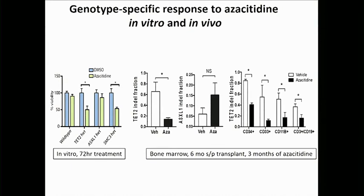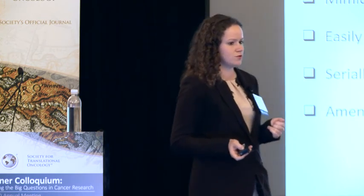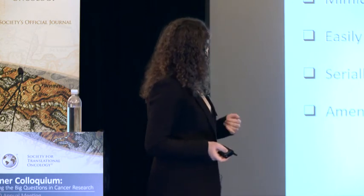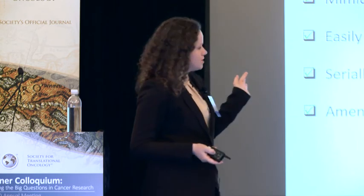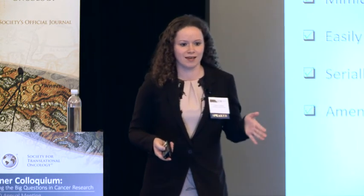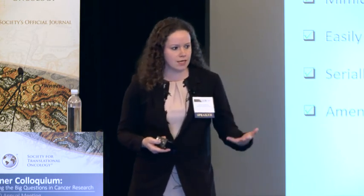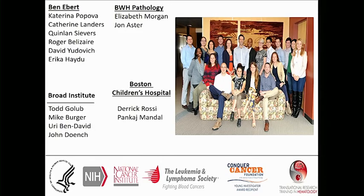I hope I've convinced you that we are perhaps one step closer to creating models more faithful to the genetic complexity observed in human myeloid malignancies — models targeting the actual cell of origin, hematopoietic stem and progenitor cells, that are easily customizable, where you can dial in and dial out specific genetic lesions, and amenable to pharmacologic testing. Clearly these models have their own limitations; the most important one being that we're engrafting cells into immunodeficient mice, so the lack of an intact immune system and the interaction of these mutant clones with the immune system is not a hallmark of these models.